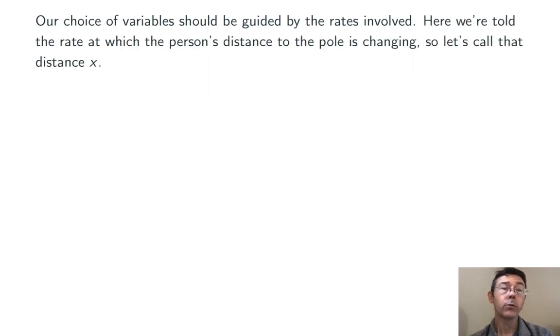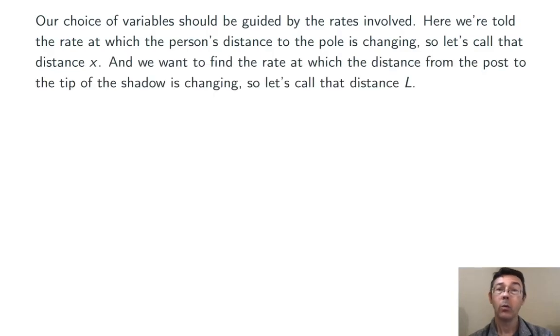Here we're told the rate at which the person is moving away from the pole. So let's call the distance from the pole to the person X. We need to find the rate at which the distance from the pole to the tip of the shadow is changing. So let's call that distance L.